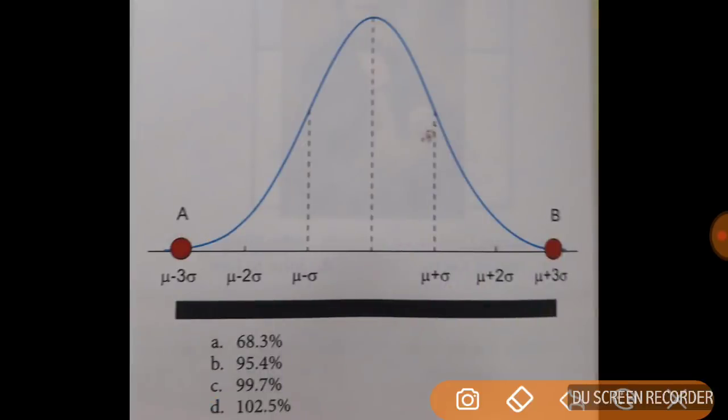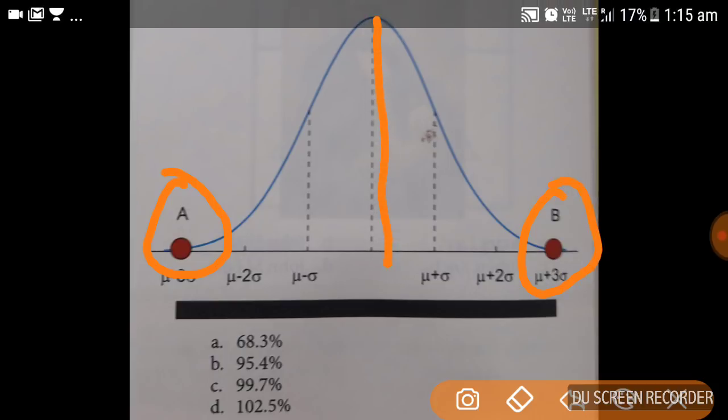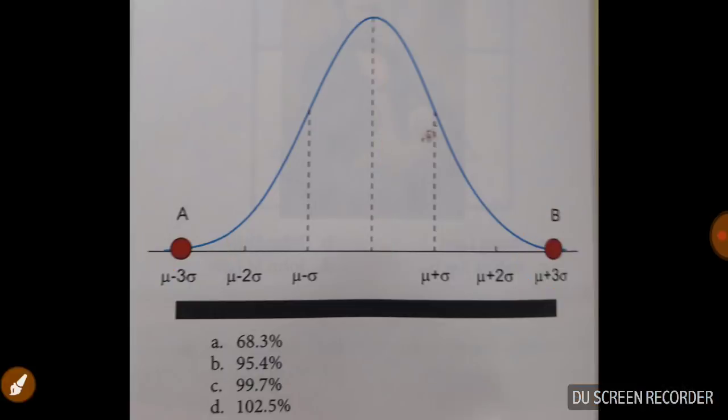So tell me which type of distribution it is showing. It is showing a Gaussian distribution. Now if I ask you what is the value if we go from the median? The question is how much is the area between point A and B on either side of the mean? So between point A and B on either side of the mean, how much is the area?